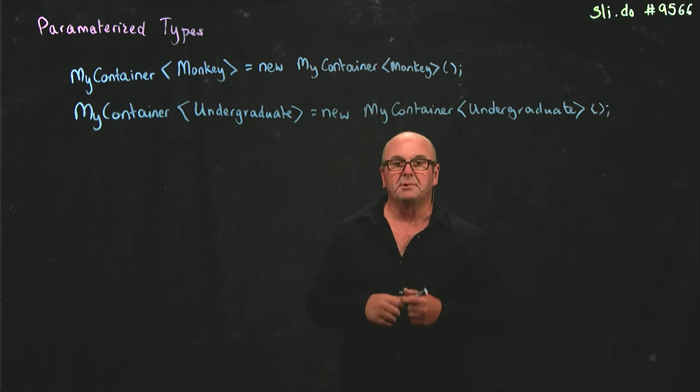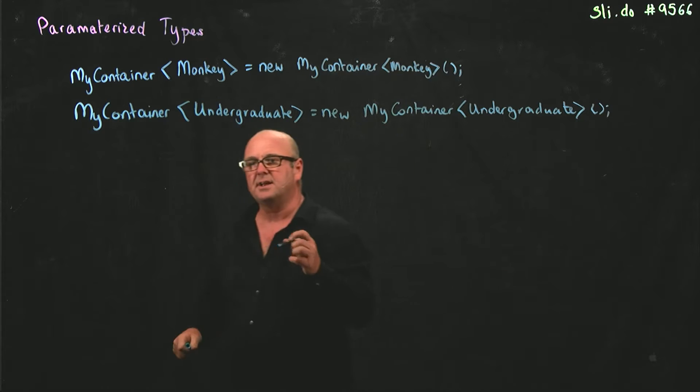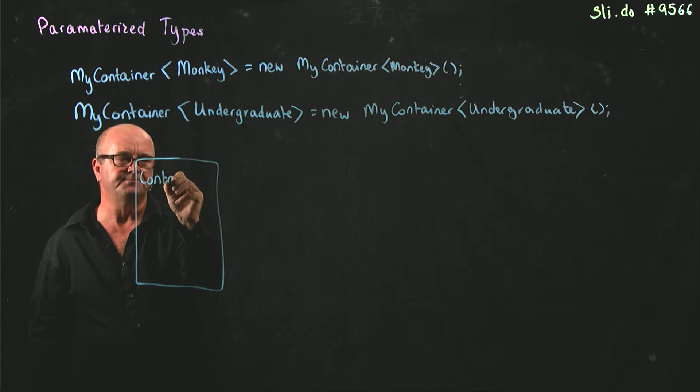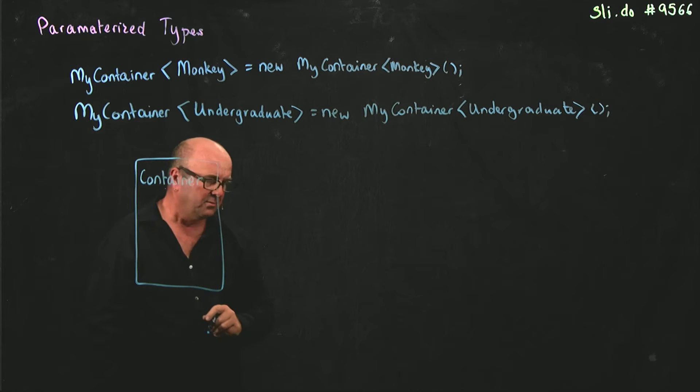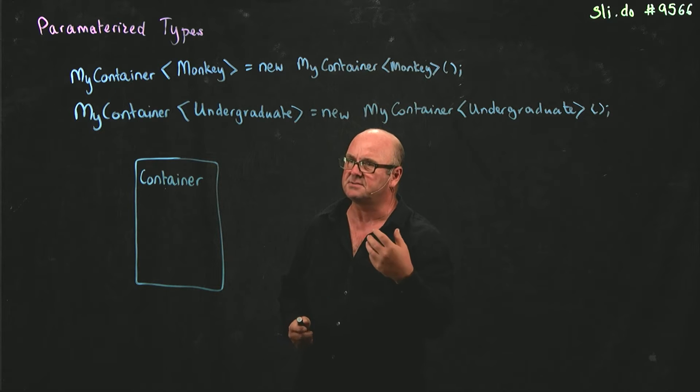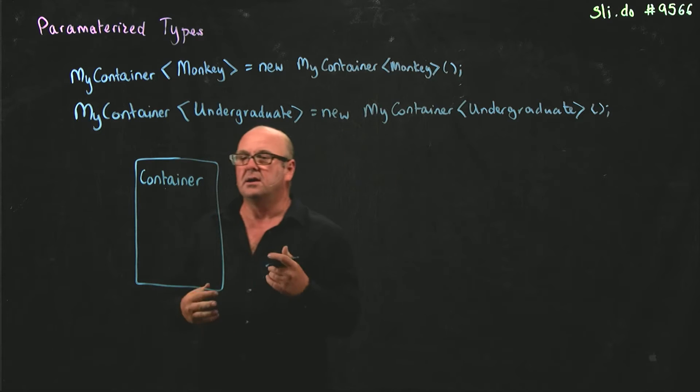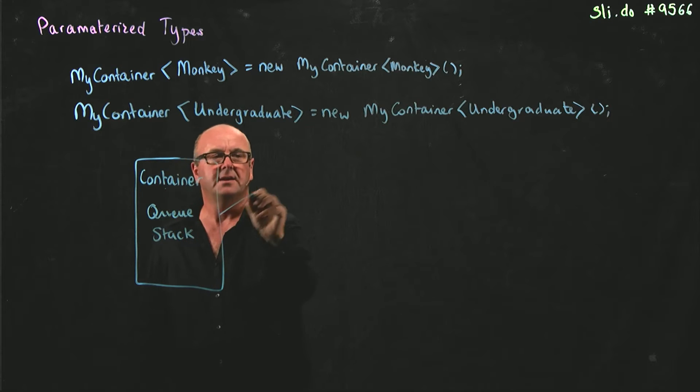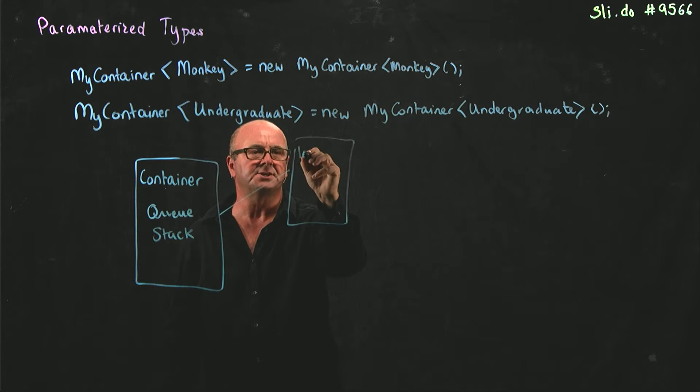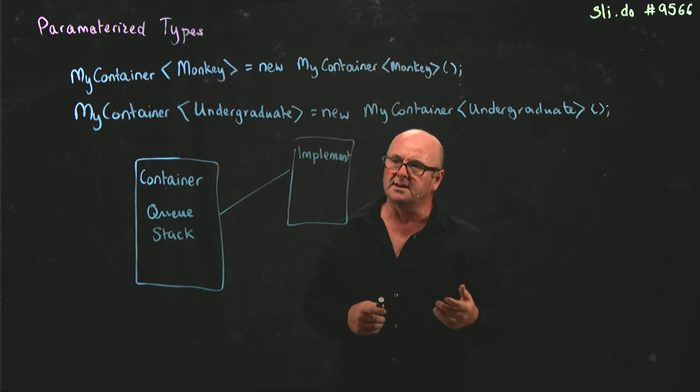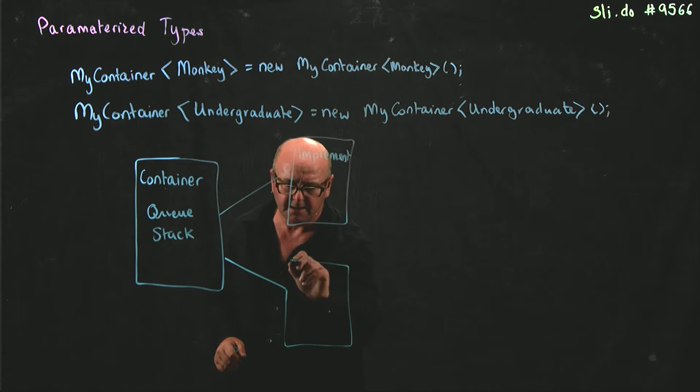So what we're really trying to separate out here are several ideas. One is the container - the thing we're going to use. Are we going to use a linked list, an array, a hash, or a binary tree? Maybe we're going to have a queue and a stack. We're trying to separate that out from the implementation. We could implement a queue or stack using a linked list, an array, or other data structures. And we're also separating it away from the data.